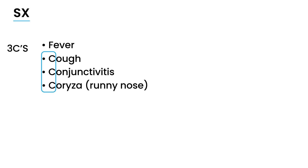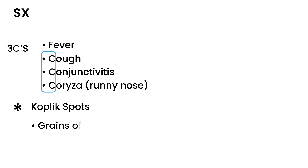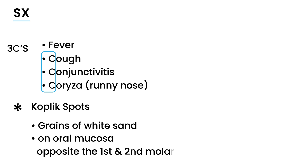The first is something known as Koplik spots. Koplik spots are small spots that resemble grains of white sand, and they're found in the mouth, on the oral mucosa, opposite the first and second molars.